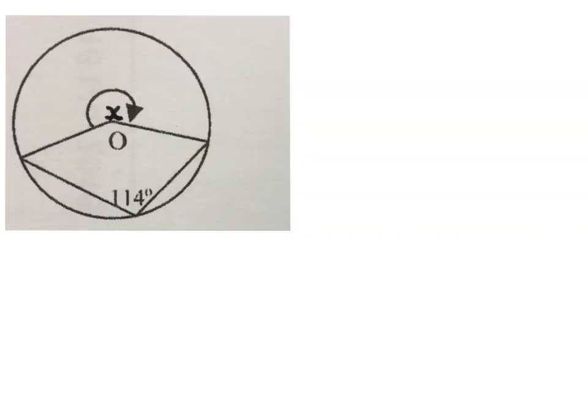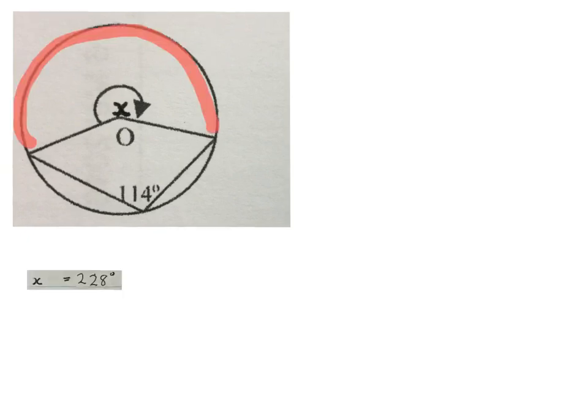Although the sketch looks different, same question. We have to solve for X. Using your calculator, you know that the angle at the center is twice the angle at the circumference. You write X equals 228 degrees. New reason. Angle at center is 2 times angle at circumference.